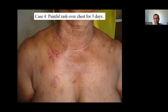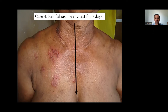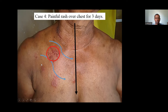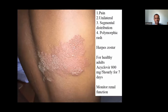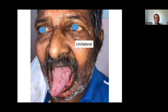Treatment: acyclovir 800mg five times daily for seven days. Adjust dose according to creatinine clearance in renal failure. Even on the tongue you can appreciate unilateral lesions not crossing the midline. Sometimes children or adults present late or with delayed diagnosis — blisters around the ears are misread as contact dermatitis. Late treatment leads to very ugly scarring. Also, a dangerous sign: lesions on the lateral border and tip of the nose indicate nasociliary branch involvement, which can cause corneal ulcerations — refer to ophthalmology immediately.